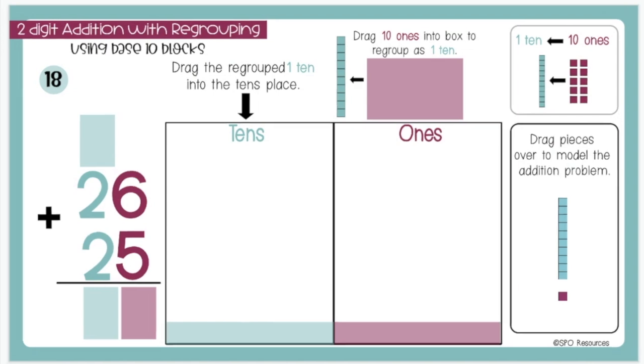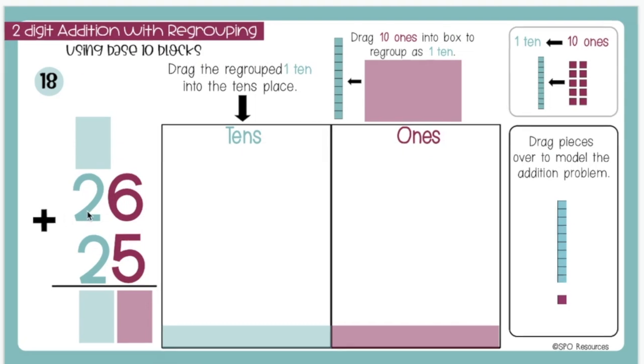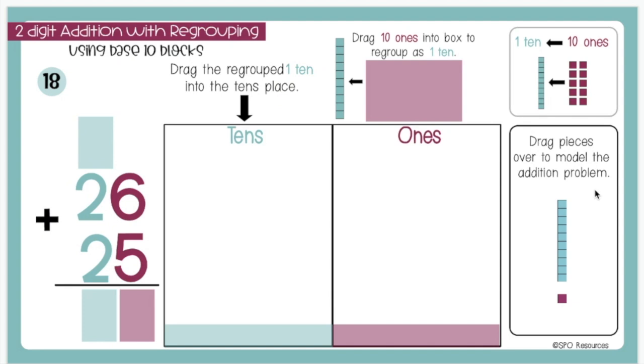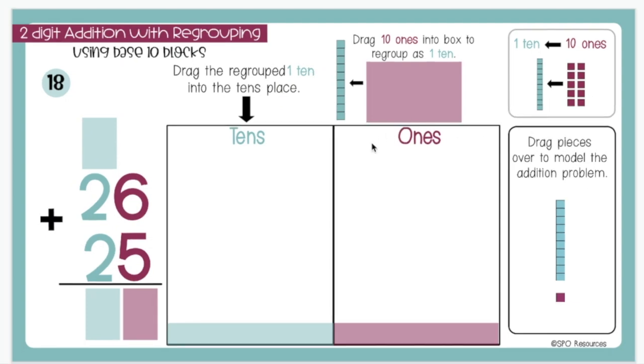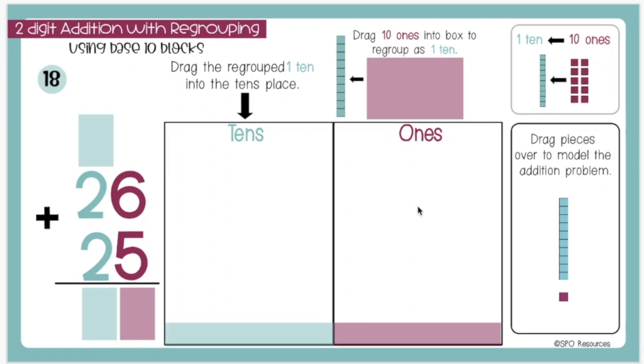We will start by looking at our problem on the left-hand side. 26 plus 25. I will start by dragging over my base 10 blocks onto my place value mat to represent the digits in this problem. For 26, I will drag over two 10s and six 1s. And for 25, I will drag over two 10s and five 1s.